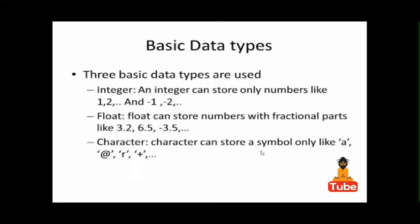Here we will discuss basic data types: integer, float, and character. Integers can store only numbers like 1, 2, -1, -2, 3, 4, 10, -10, 1100, up to a certain range.